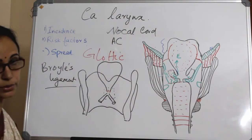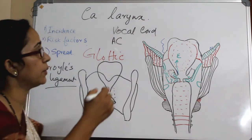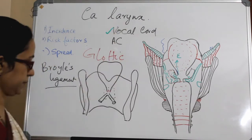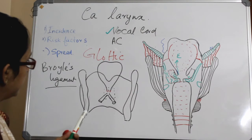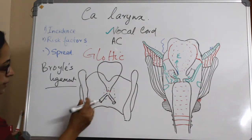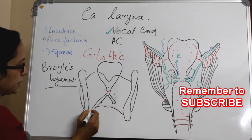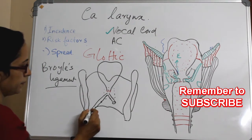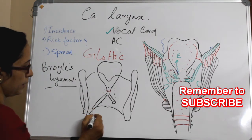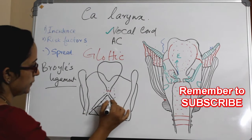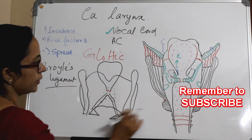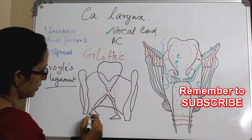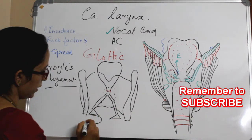What about the vocal cords? I'll explain the spread of the vocal cord region. The vocal cord extends posteriorly, and here comes the arytenoid. This arytenoid is resting on the cricoid cartilage.